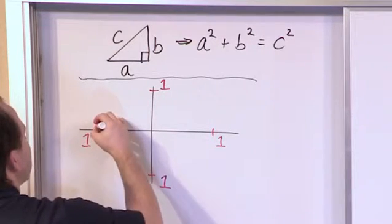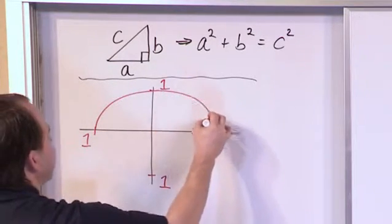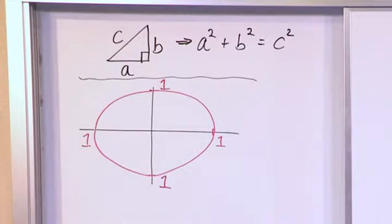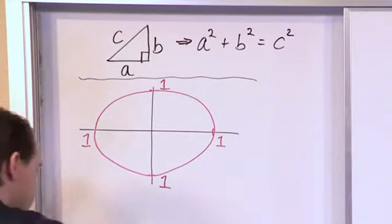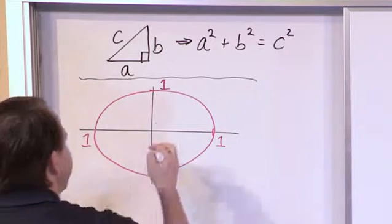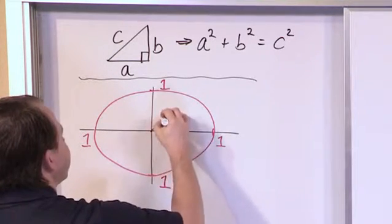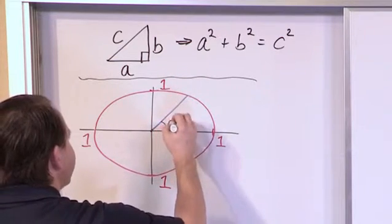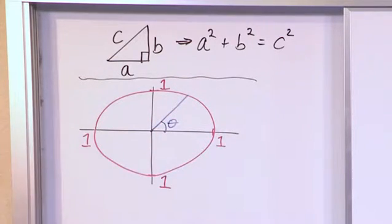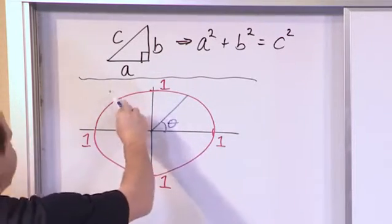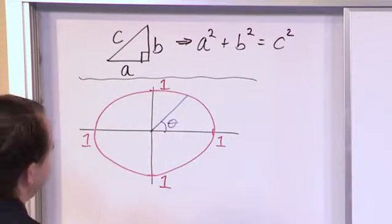Here's the circle — I apologize in advance, it looks more like an ellipse, so use your imagination. Now let's take any random angle. From the origin, we'll draw a line out to the unit circle at some angle. This specific angle doesn't matter; it can be anywhere. I'm just drawing a specific example to illustrate the idea.